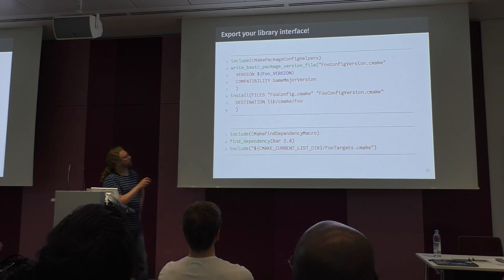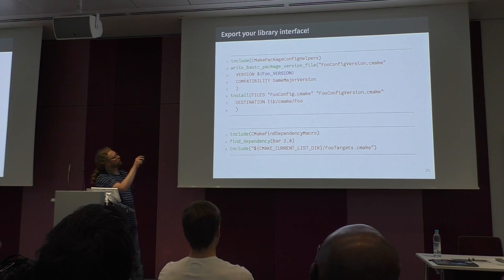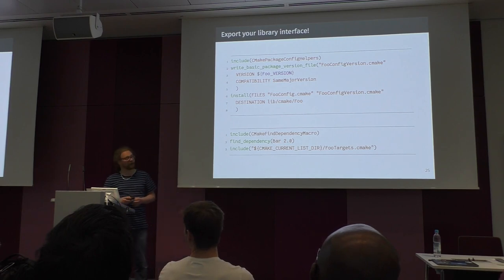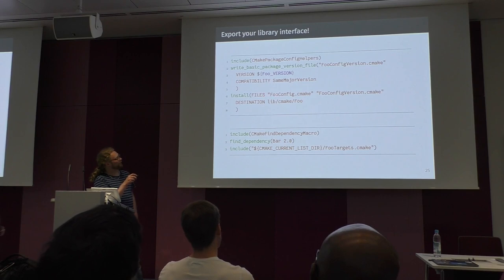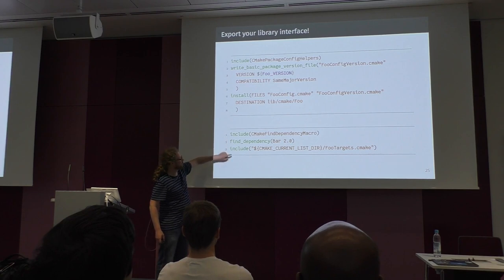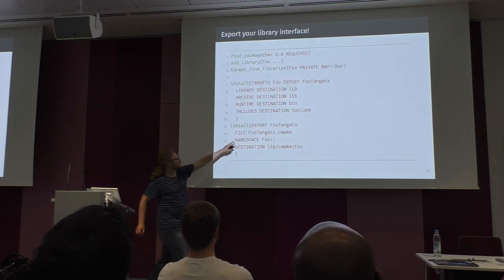We also want to support version checking so clients can verify they have the right version. There is a CMake-provided module with write_basic_package_version_file. We create it with our current version and set the compatibility — when we change the major version, that means breaking API changes. Then we install both the generated version file and the foo-config file. In foo-config, we simply include the file we just generated.